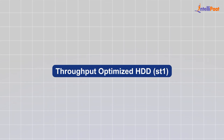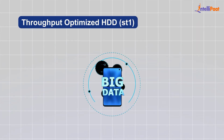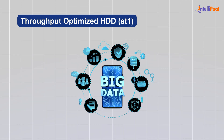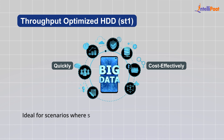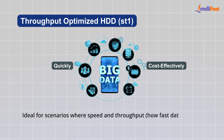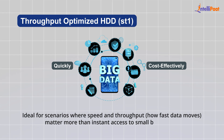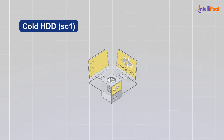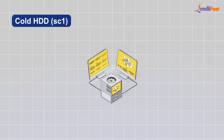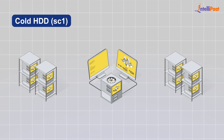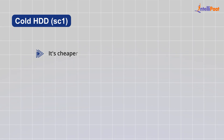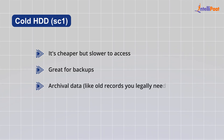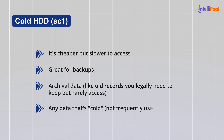Throughput-Optimized HDD, ST1, is ideal for working with big data or processing large amounts of data quickly and cost-effectively — scenarios where speed and throughput matter more than instant access to small bits of data. Cold HDD, SC1, is for when you want to store a lot of data but don't need to access it very often. It's cheaper but slower to access — great for backup or archival data like old records you legally need to keep but rarely access.